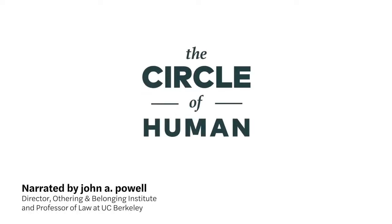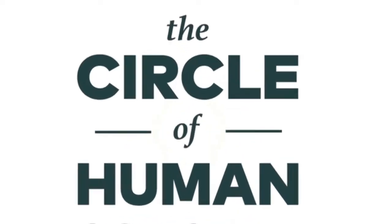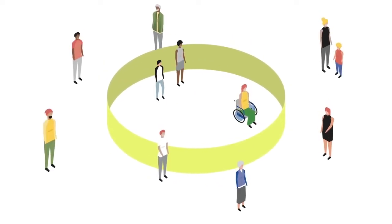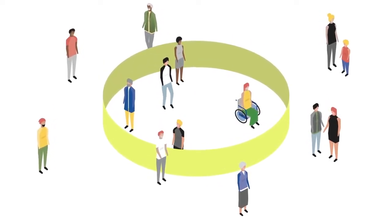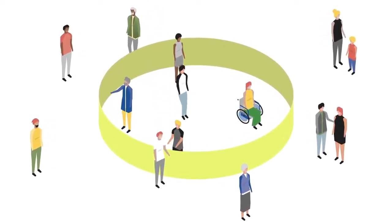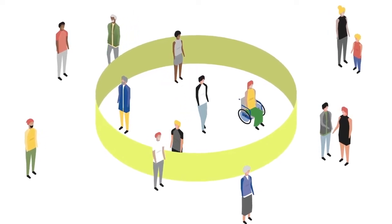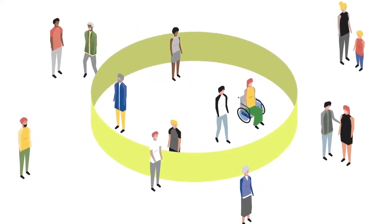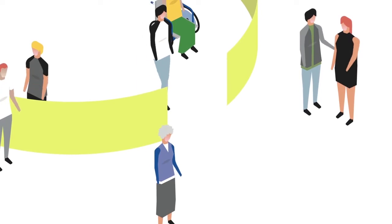Who belongs within the circle of human concern? In a democracy, belonging is the most important endowment we share with one another. Only those who fully belong may select who belongs, may participate to define the rights of members and which needs must be met by the community.